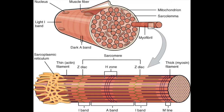Next we have the I band, which is the area where there is just actin thin filament and no myosin thick filament. To review: the H zone is just myosin with no actin; the I band is just actin with no myosin; and the A band is the length of the myosin thick filament regardless of overlap. We also have Z lines, which demarcate the borders between each sarcomere — from Z line to Z line is one sarcomere.